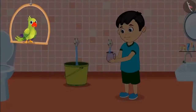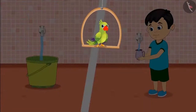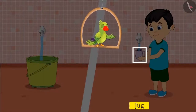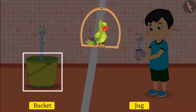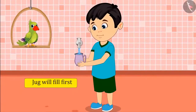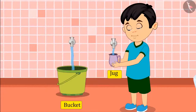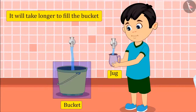Today, Chotu is filling water in the bucket with a tap for bathing. And at the same time, he is also filling a jug to water the plants from another tap. Children, if both things start filling together, do you think that Chotu's jug will be filled first or the bucket? Yes, the first thing to get filled is the jug and later the bucket, because Chotu's jug is smaller than the bucket, it will carry less water. This means it will take more time to fill the bucket.